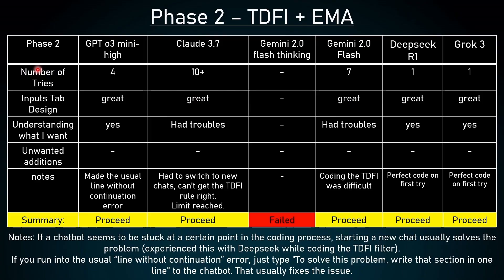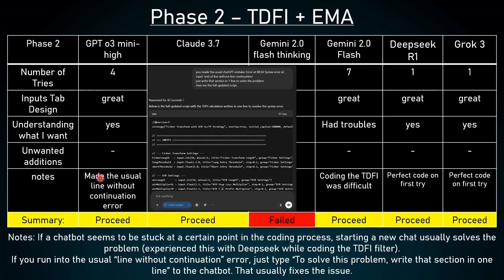This is what I usually do if an AI chatbot generated good quality scripts — I tell it that it was great work and it should continue this quality. Now let's see the phase 2 spreadsheet. Starting with GPT-O3 Mini High: it took 4 tries to get the correct code, which is not too much. The input step design was great, it understood what I wanted, there were no unwanted additions, but it made the usual line without continuation error. If you've been coding with AI chatbots, you'll notice this error often. The solution: copy the error, paste it to ChatGPT, and tell it to solve the problem by writing that section in one line. Nine out of ten times that solves the problem instantly. In summary, GPT-O3 Mini proceeds.